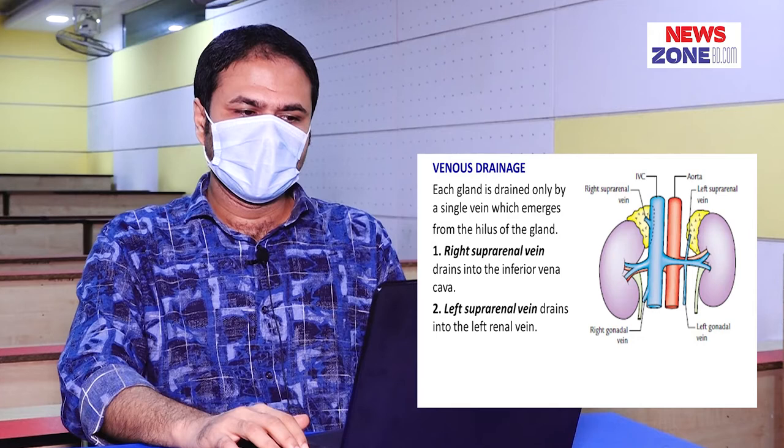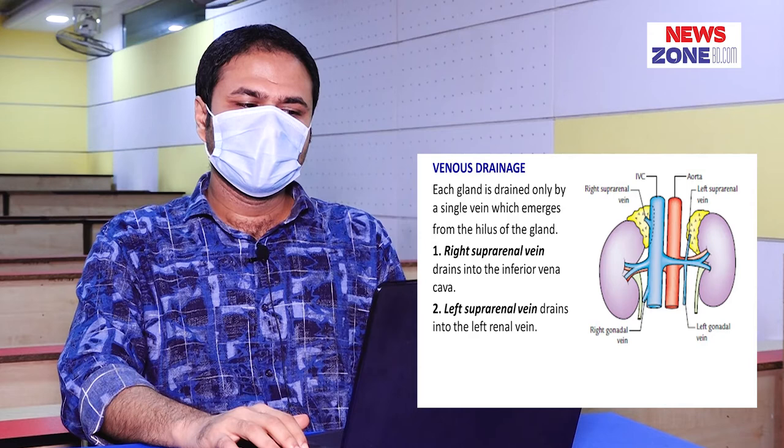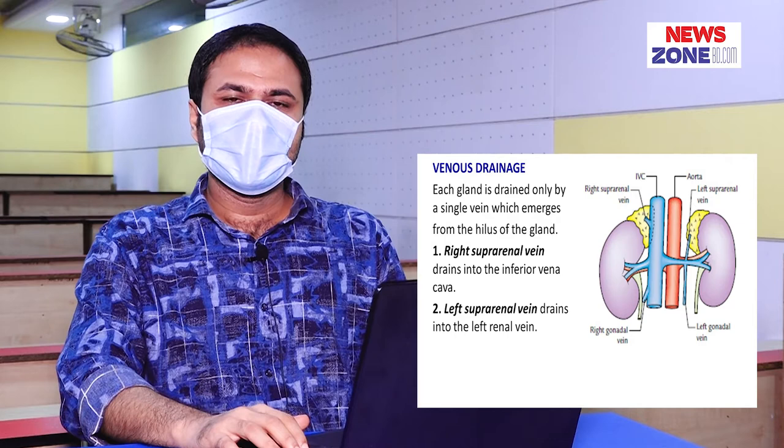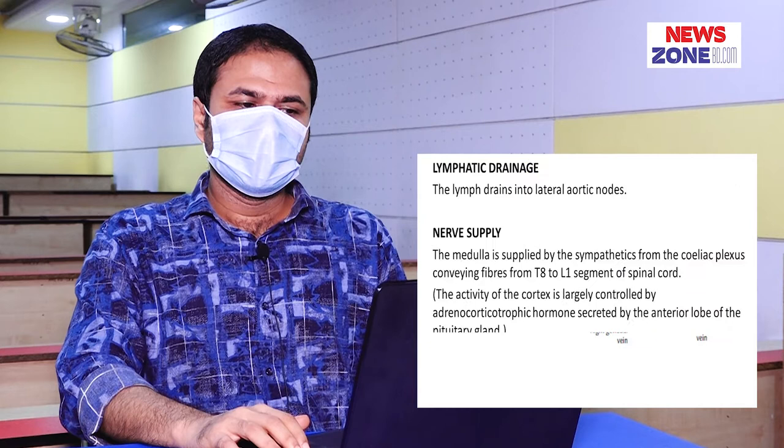Venous drainage of the suprarenal gland. The veins start from the medullary sinusoids and unite to form a single suprarenal vein, which emerges through the hilum of the gland. The right suprarenal vein drains into the inferior vena cava and the left vein drains into the left renal vein.